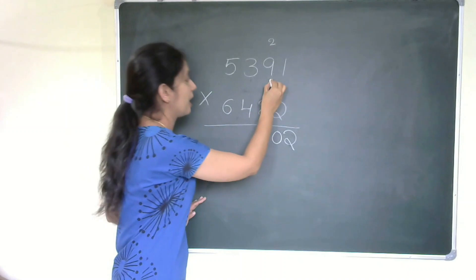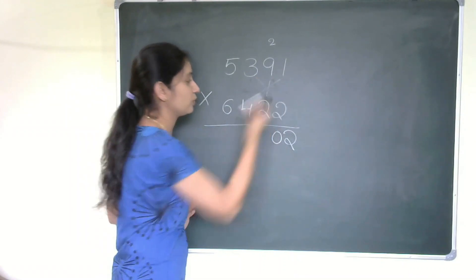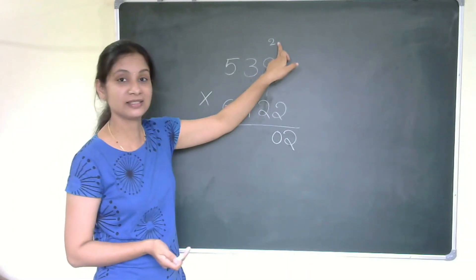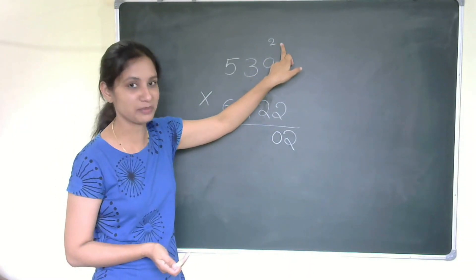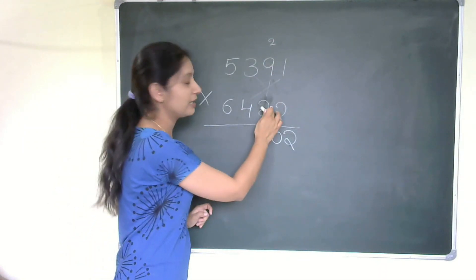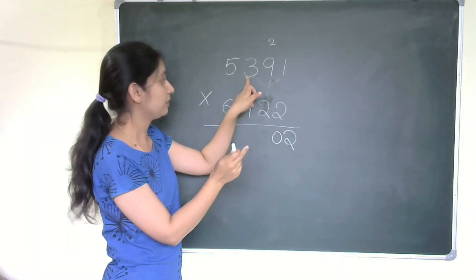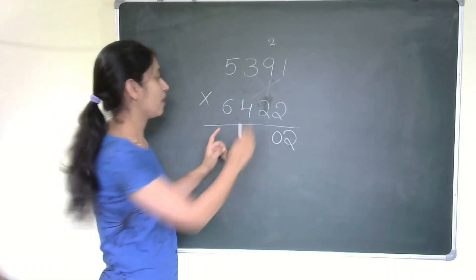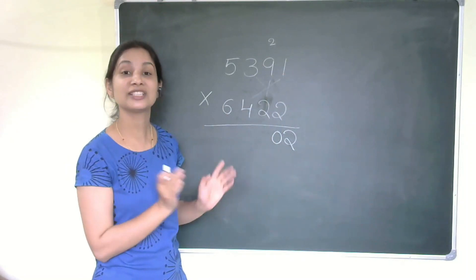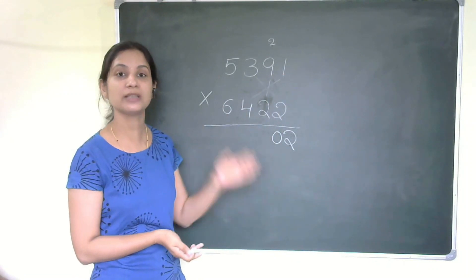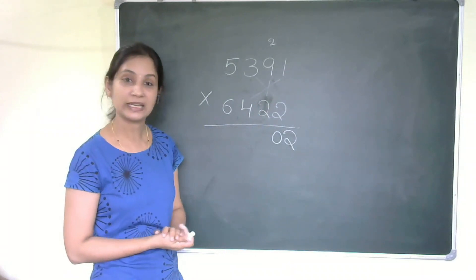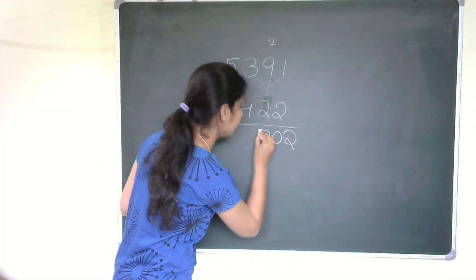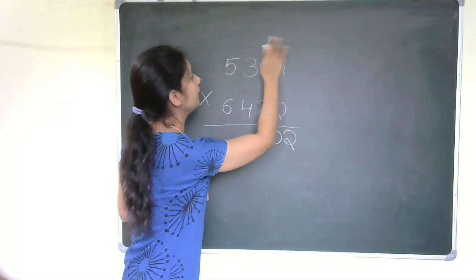Step three: nine twos are eighteen, plus three twos are six — eighteen plus six is twenty-four. Plus four ones are four — twenty-four plus four is twenty-eight. Plus the carry-over two — that is thirty. Write zero, carry over three.